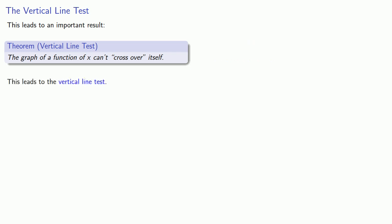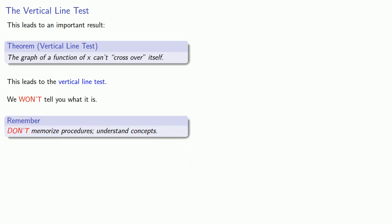This leads to the vertical line test. We won't tell you what that is because it's important to remember: don't memorize procedures, understand concepts. The important idea is that graphs that cross over themselves have multiple values of y for the same value of x.